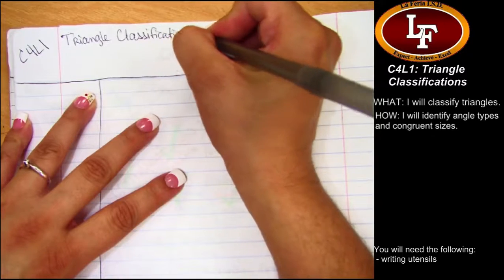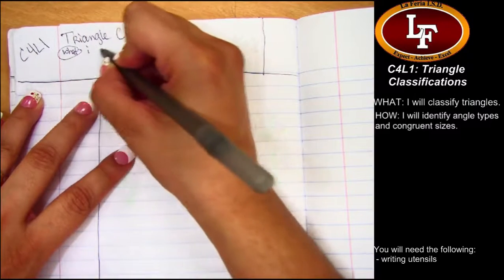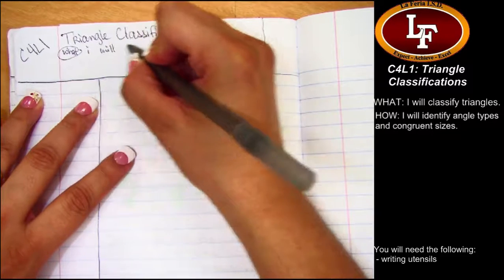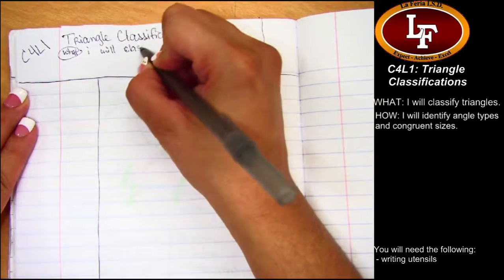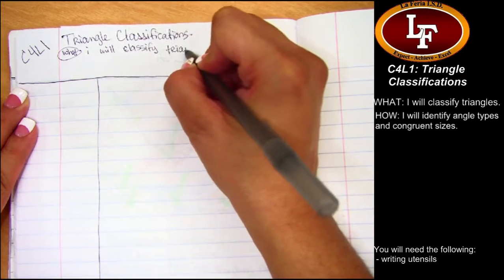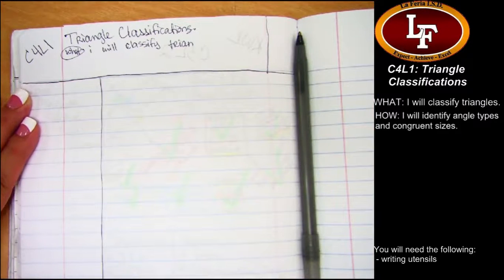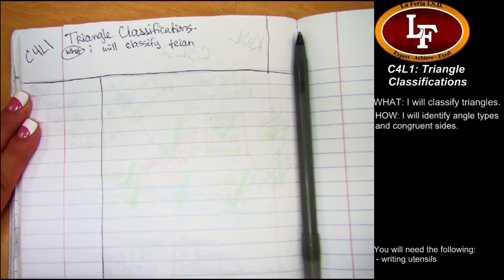What? I will classify triangles. That's what we're going to be doing today. How? That's how we're going to do it. I will identify angles using congruent sizes. Correct, Mom? Oops, I meant sides. You put sizes. I put sizes. Rip. Let me fix that. Hang on. There we go. I meant sides. Congruent sides.